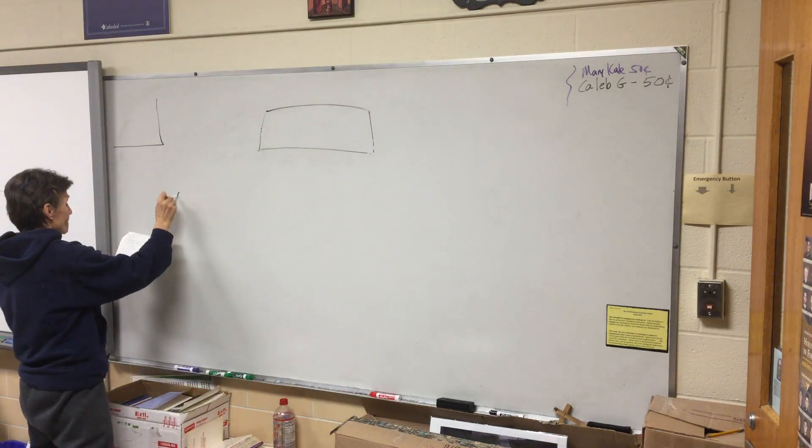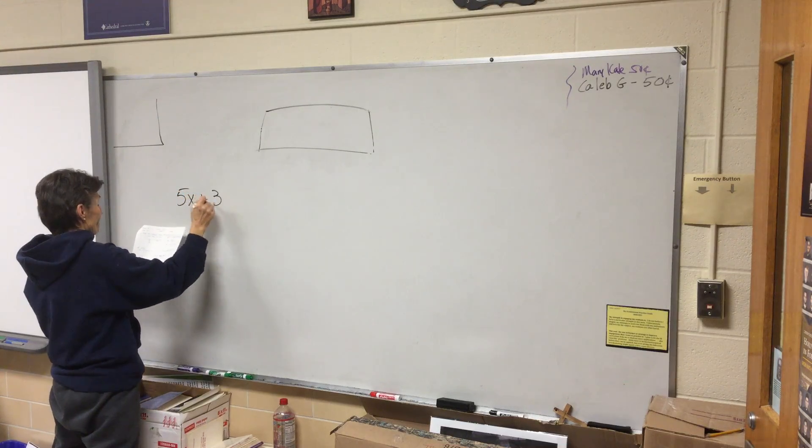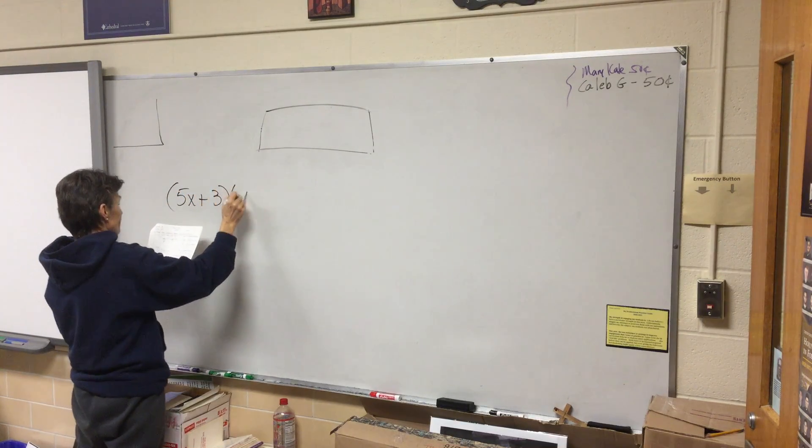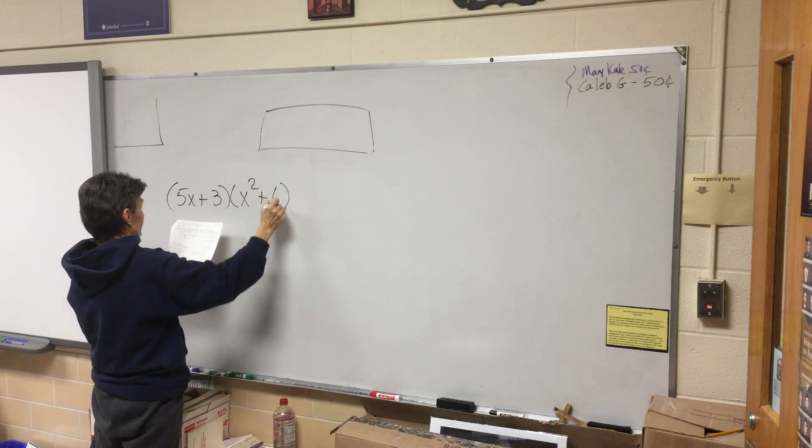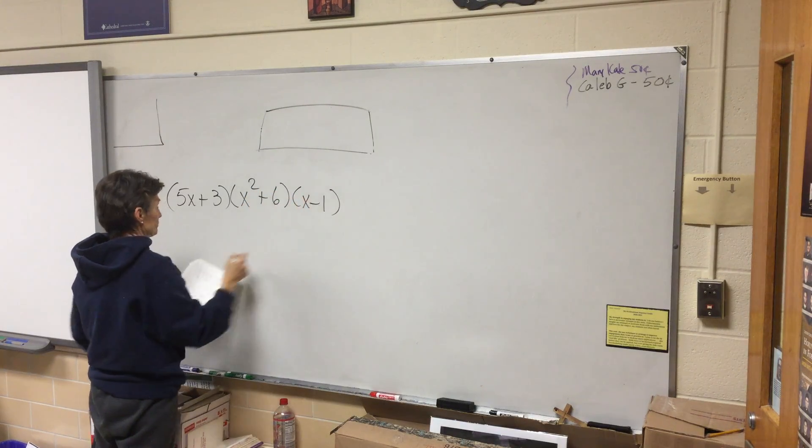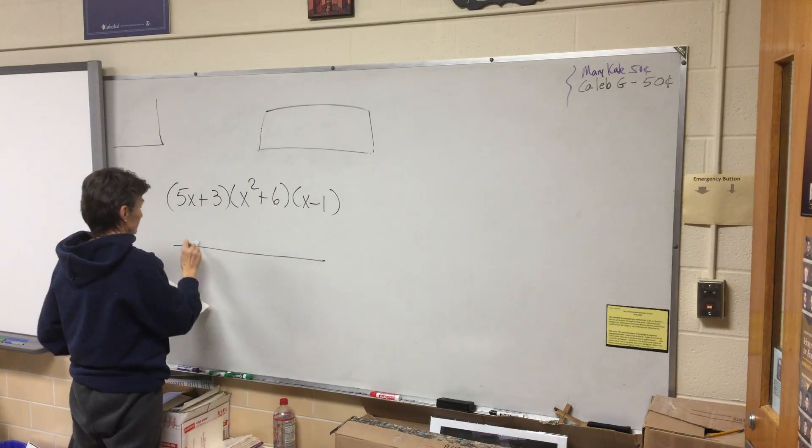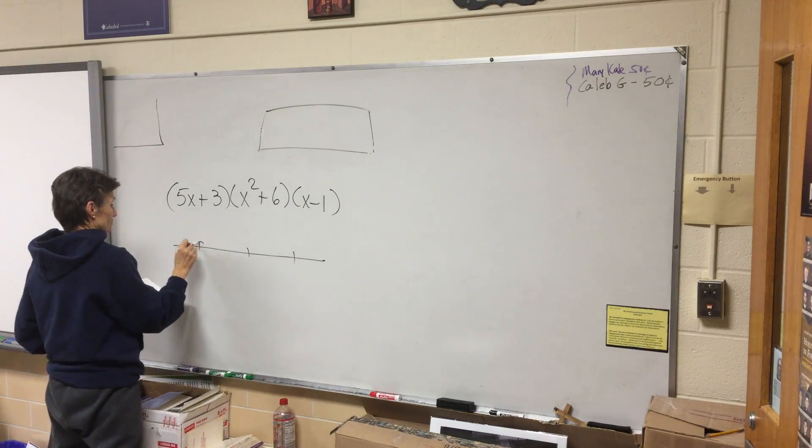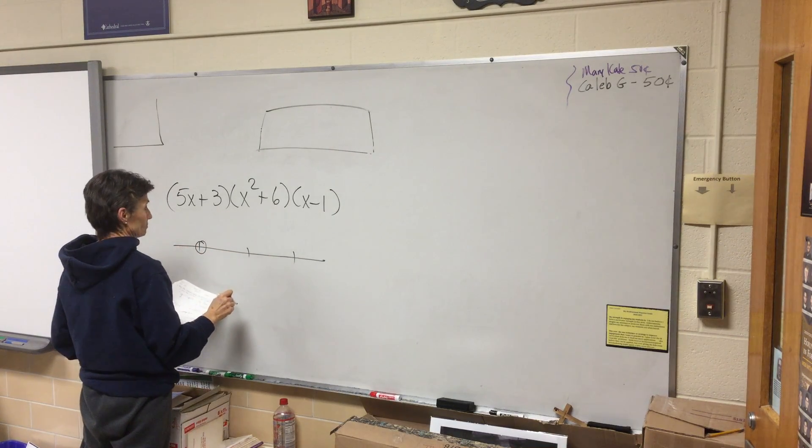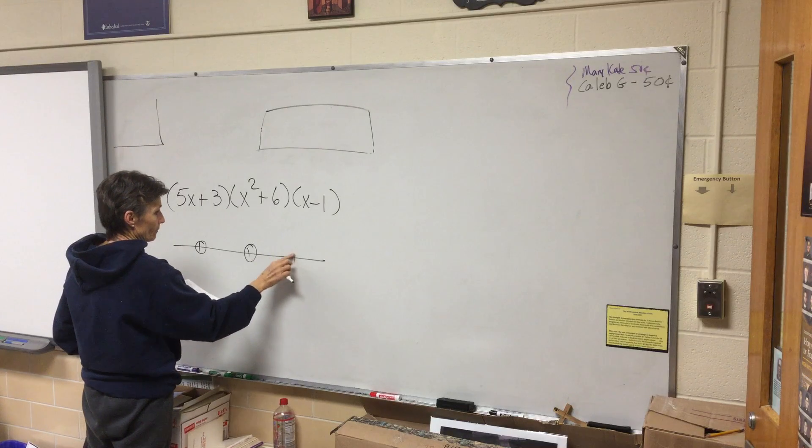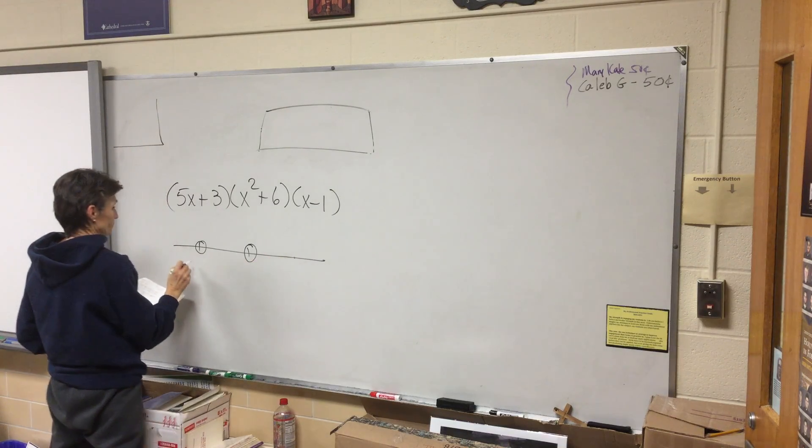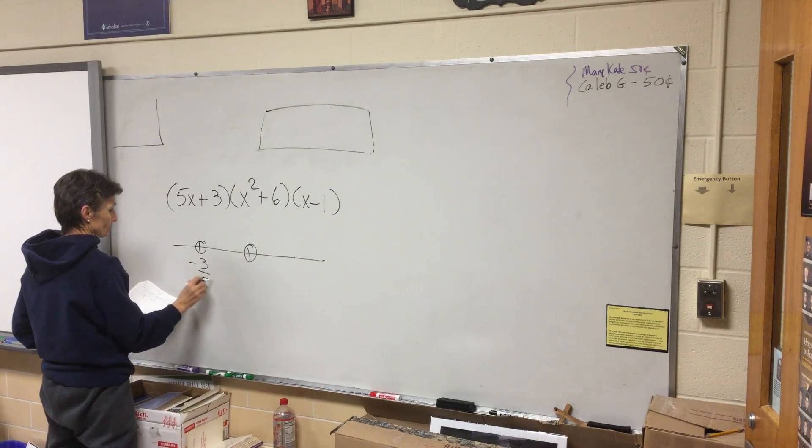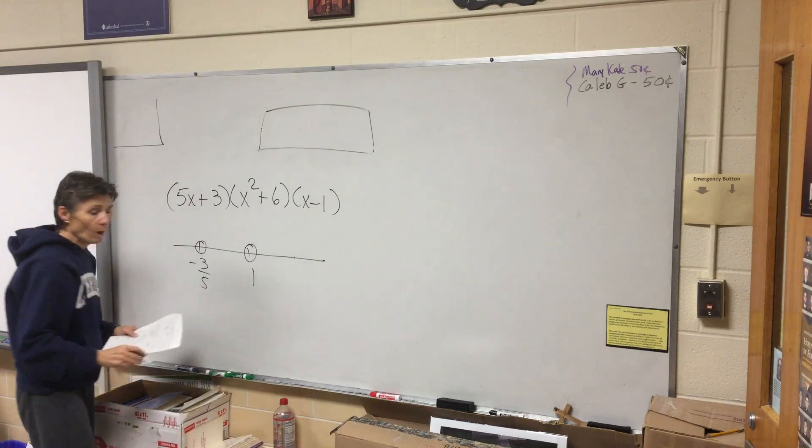Can you walk through number one, how you're doing it? Tell me what you're doing. I'm putting negative three over five on a number line, and one.